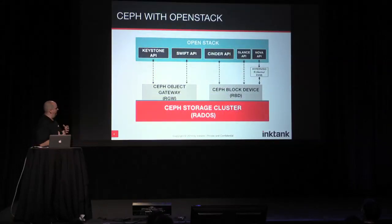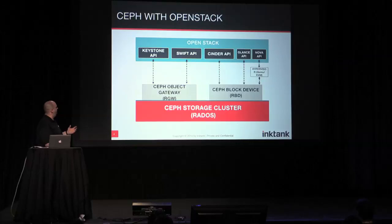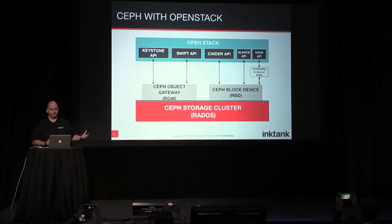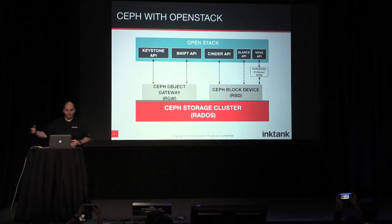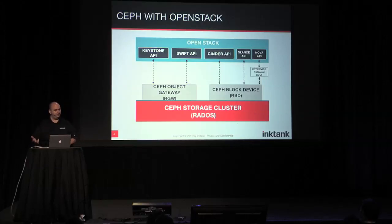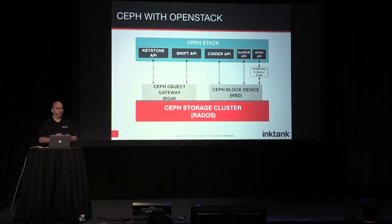With OpenStack, Keystone and Swift are integrated into OpenStack for object storage through the Ceph object gateway, which we call the RADOS gateway. Cinder, Glance, and Nova are integrated with Ceph through the Ceph block device, which allows storage of images, volumes, and snapshots, and it allows you to run virtual machines off of storage that's distributed through an entire storage cluster.